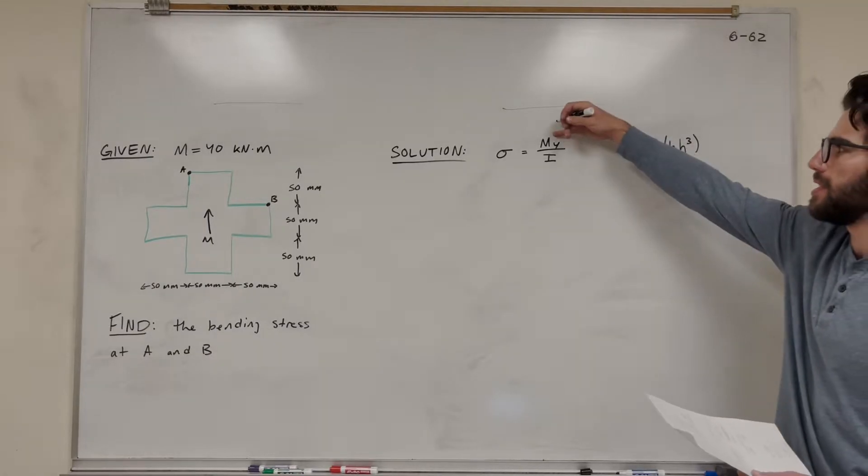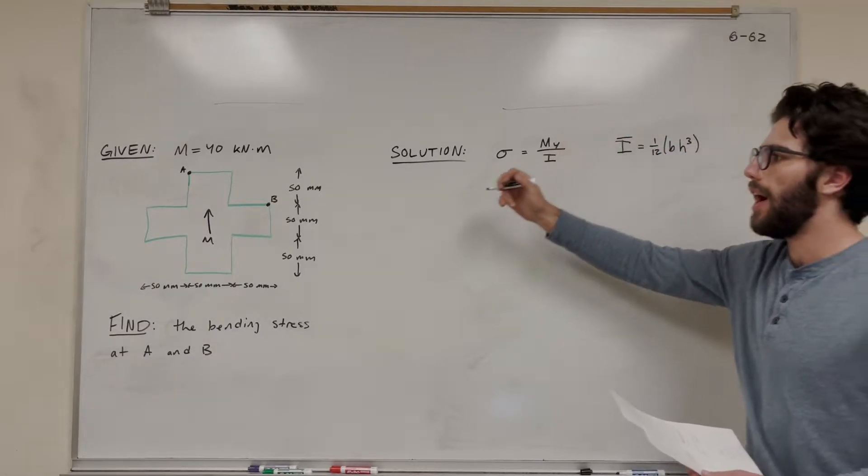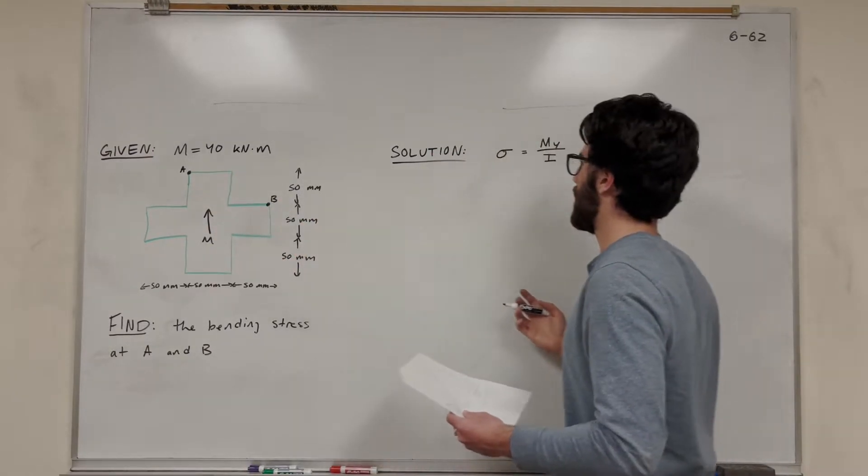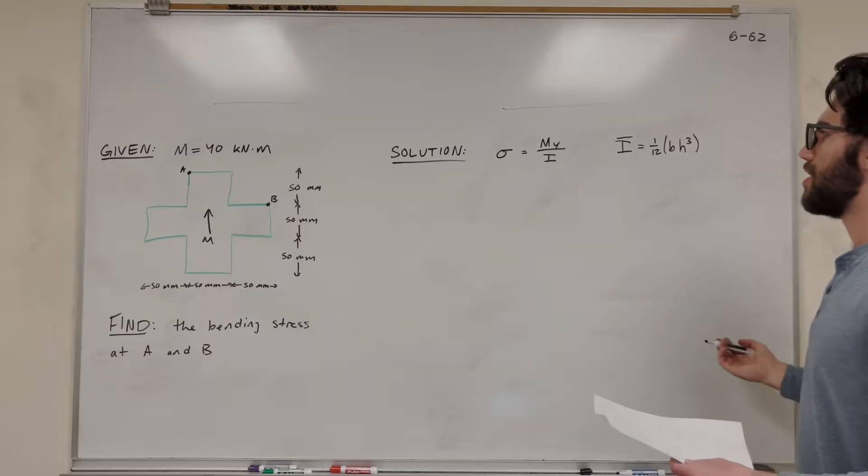So what do we need to find? We know moment, and we know Y. Y is just the distance from the center to that point. So we know those two things. All we need to really find is that moment of inertia.